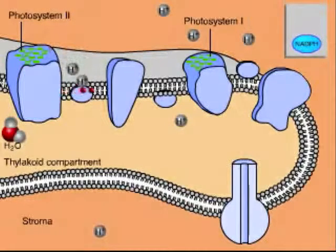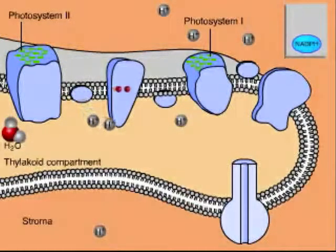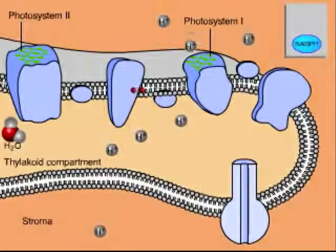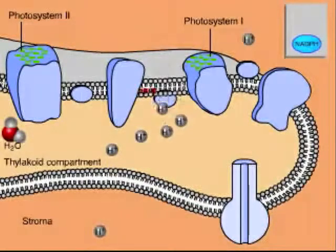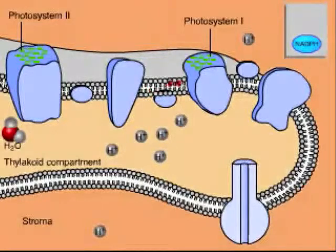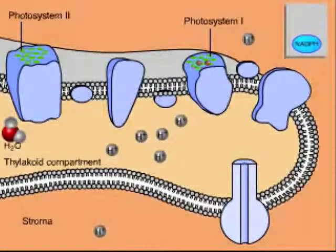Their energy is used to pump hydrogen ions from the stroma into the thylakoid compartment, creating a concentration gradient. Electrons leaving this electron transport chain enter photosystem 1, replenishing its lost electrons.